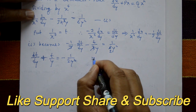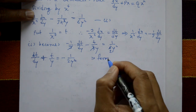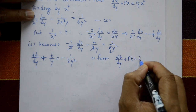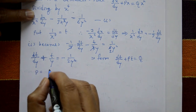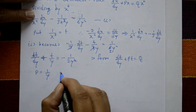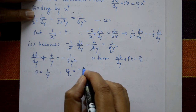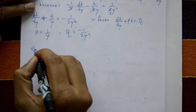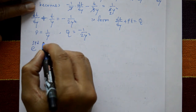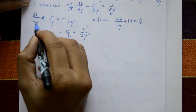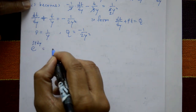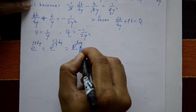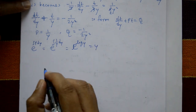This equation is of the standard linear form: dt by dy plus P·t equals Q, where P equals 1 by y and Q equals minus 1 upon 2y squared. Now find the integrating factor: e raised to the power of integral of P dy, which is e raised to integral of 1 by y dy, equals e raised to log y, which equals y.